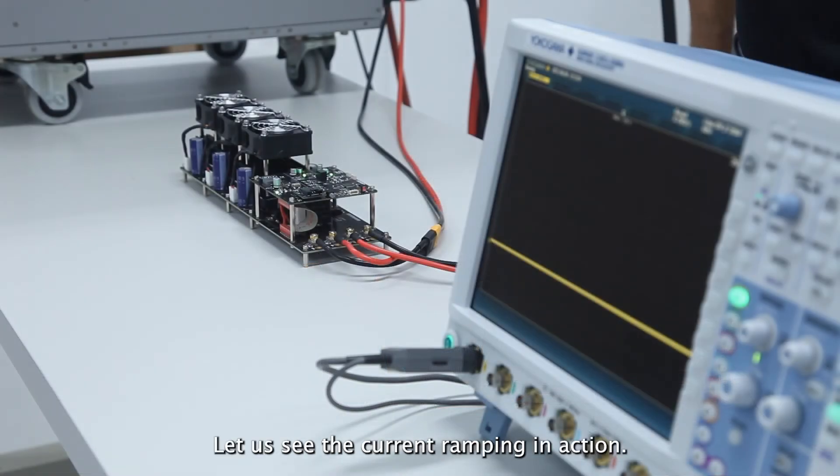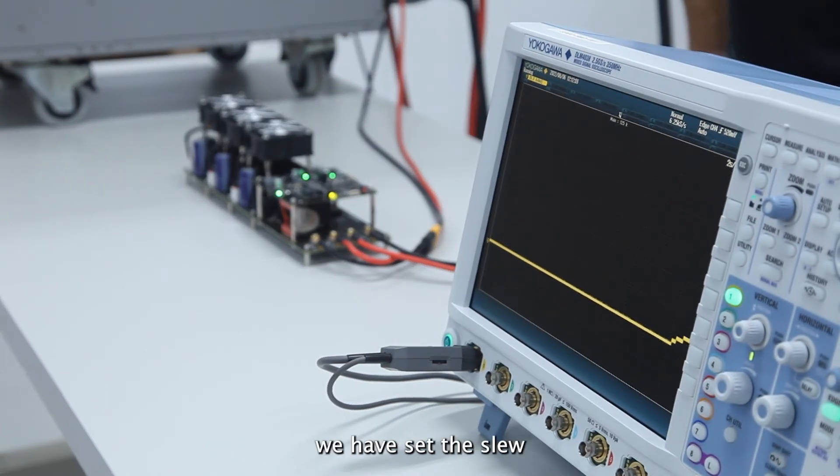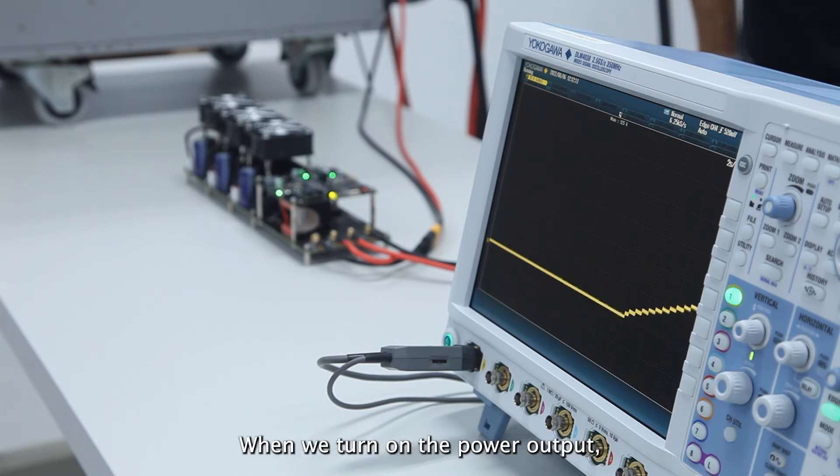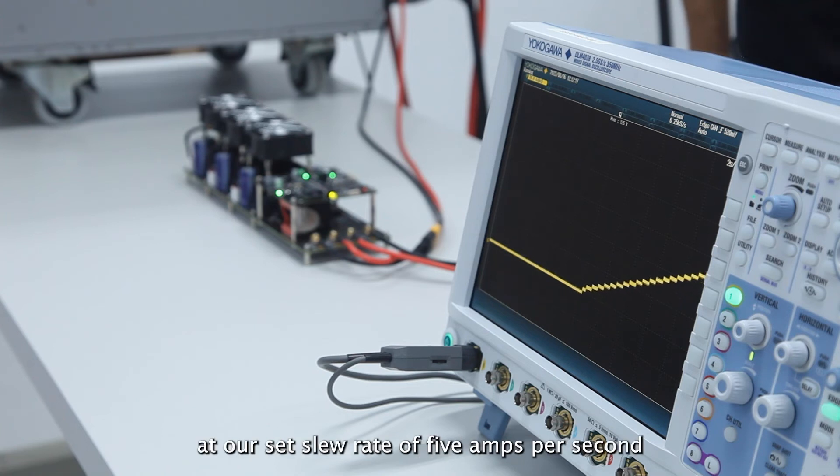Let us see the current ramping in action. For our example, we have set the slew rate to 5A per second. When we turn ON the power output, you can see that the current is being gradually ramped up at our set slew rate of 5A per second until it reaches the target current output.